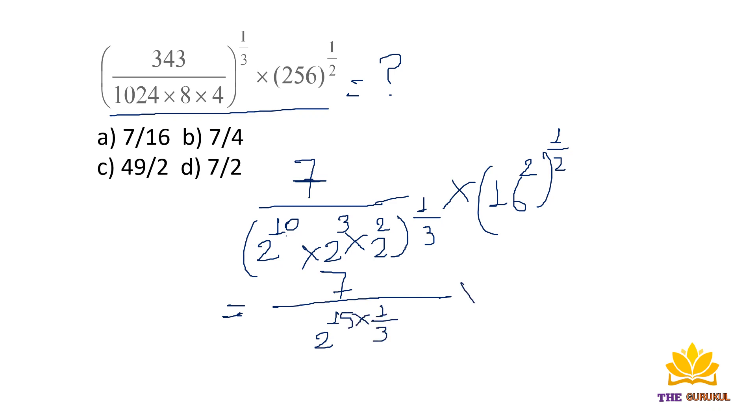So we get 7 divided by 2 raised to 10 plus 3 is 13, plus 2 is 15, meaning 2 raised to 15, times 1 by 3, times 2 to the power 4.